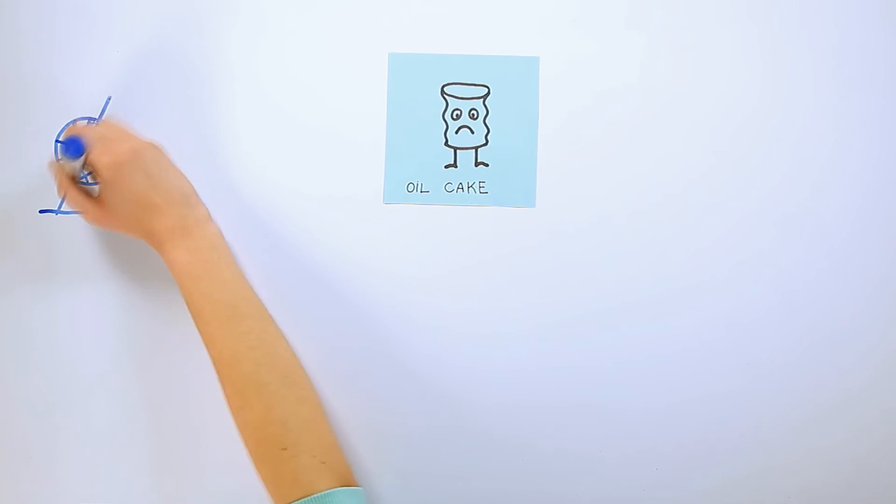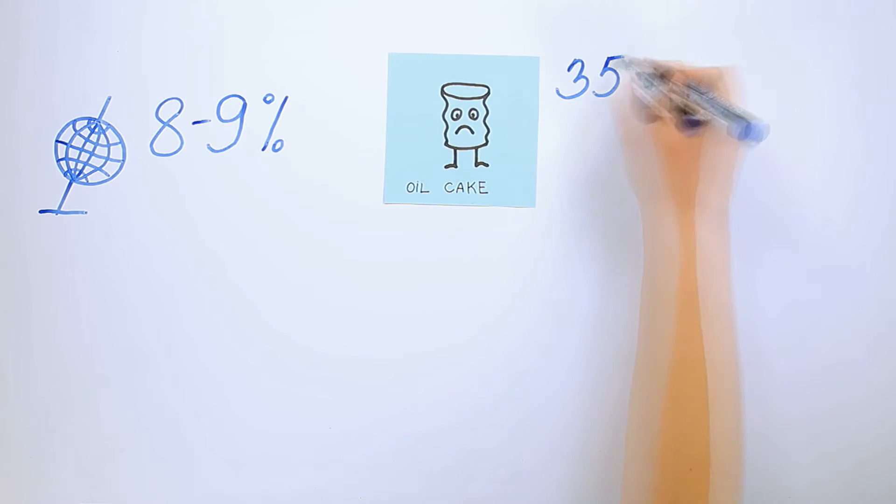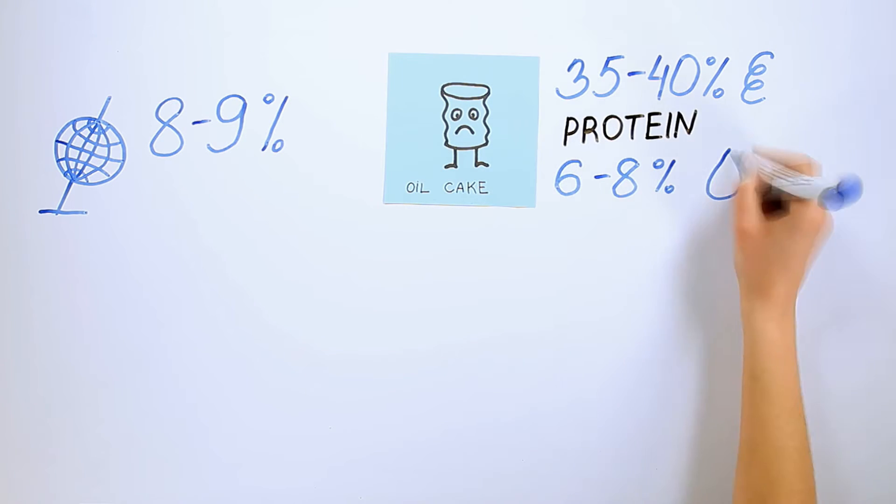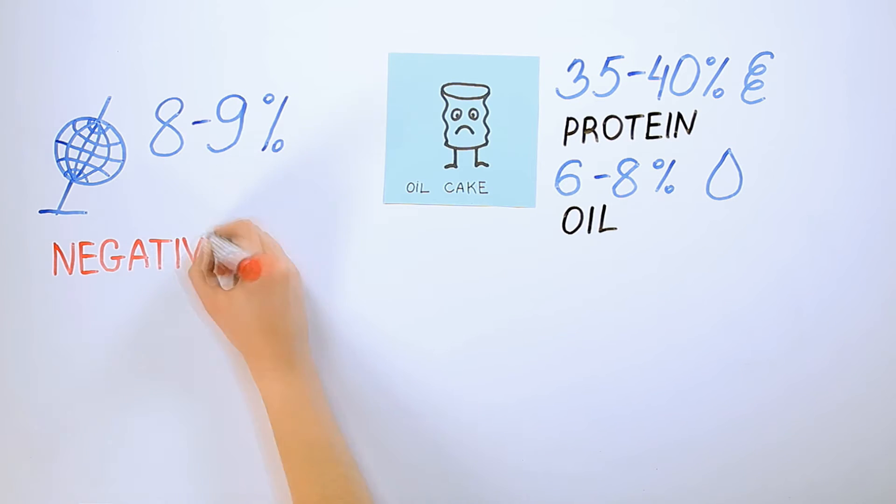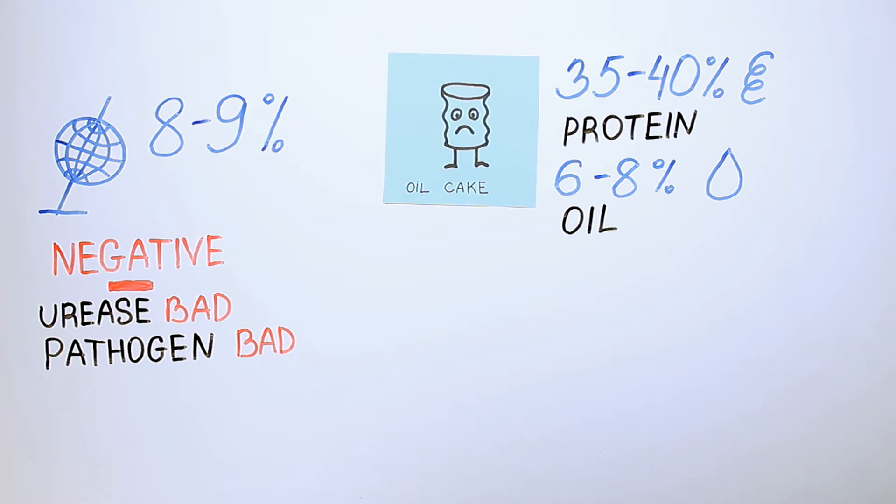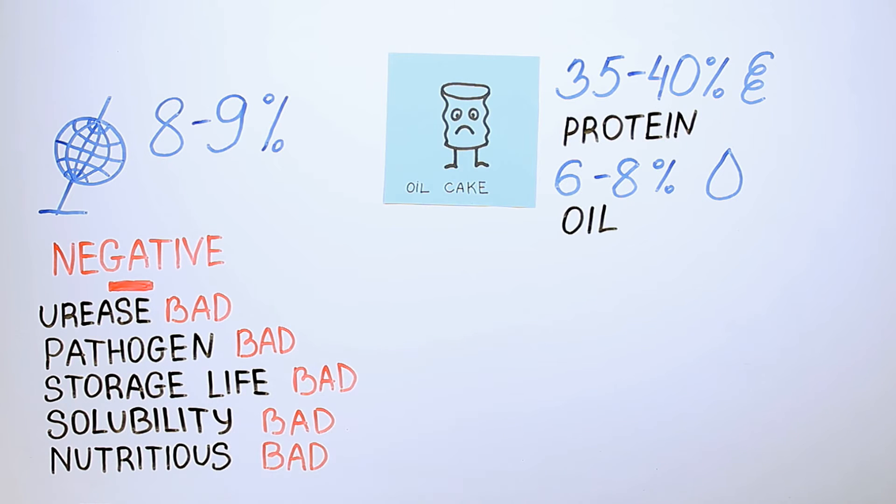Oil cake data: 8-9% of world production, 35-40% protein, 6-8% oil. Disadvantages: uncontrollably high levels of urease activity, presence of pathogens, short shelf life. Low protein absorption and solubility. Lack of toasting results in higher concentrations of anti-nutrition.